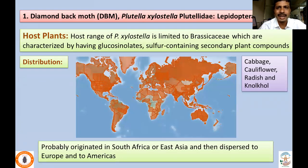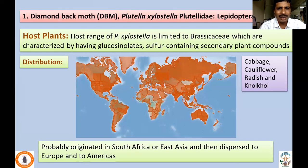We'll start with the Diamond Backmoth, Plutella xylostella, which belongs to family Plutellidae. If you refer to world literature, it is now considered to belong to family Yponomeutidae. This species Plutella xylostella attacks almost all the cole crops — majorly cabbage, cauliflower, radish, and alcohol. If you look at the distribution, it is distributed throughout the world except in a few countries of Africa and Russia, and has been reported both in temperate and tropical countries.